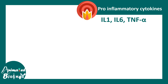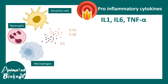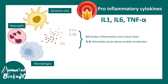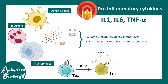Let's talk about pro-inflammatory cytokines: IL-1, IL-6, and TNF-alpha are key cytokines associated with inflammatory responses. They are generally secreted by dendritic cells, neutrophils, or macrophages, and lead to responses like fever and acute phase protein production. The TH1 subpopulation secretes TNF-alpha and interferon gamma, which can lead to sepsis.